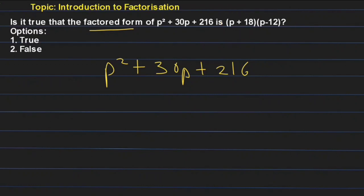So how will we do it? We need to factorize this. If the answer comes out to (p + 18)(p - 12), the answer will be true, otherwise false. So let us solve.